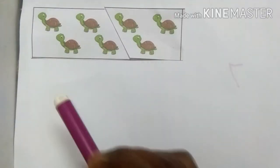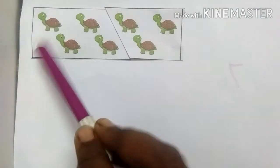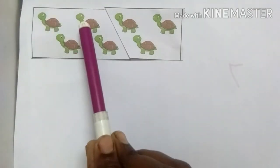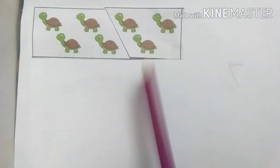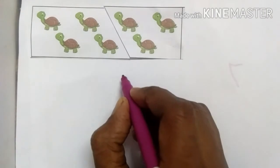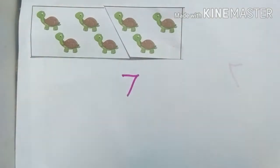See here. How many turtles are there? Let's count. 1, 2, 3, 4, 5, 6, 7. Total 7 turtles are there.